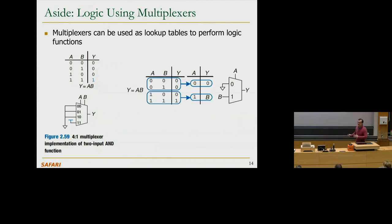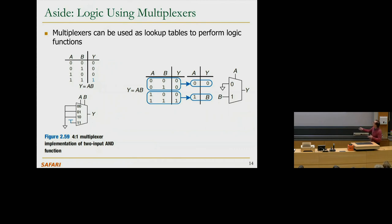You can simplify this expensive implementation. Through logic simplification, you can realize that for the AND function, if A is zero, Y is zero, and if A is one, the value is really B. So instead of a 4-to-1 MUX, you only need a 2-to-1 MUX. A is the select input, B is one of the data inputs on the one select line, and you hardwire the other input to zero.